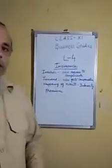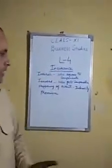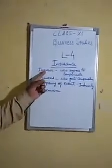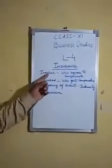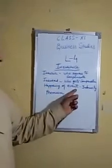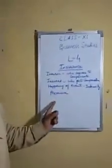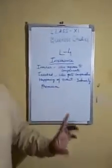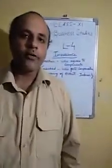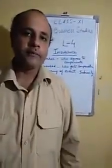So students, today we have started the topic of insurance and we have discussed four terms: insurer, insured, happening of event, and premium. That's all for today. Thank you and have a nice day.